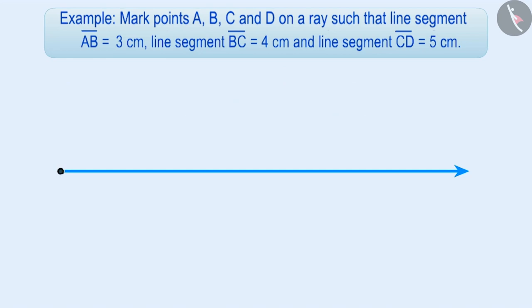Here, we will take A as the starting point of the ray. Now, we have to make line segment AB equal to 3 cm on it. Can you tell me how we are going to do this? Think for a while.